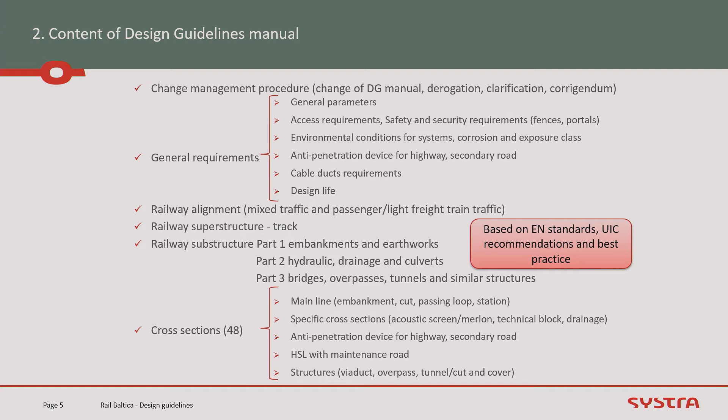We have one tome for tracks. For the substructure, we have three tomes: one for earthworks and embankment, one for hydraulic and drainage, and one for structures and tunnels. We have also prepared 48 cross-sections in total, which already provide a very good basis for all design tenders and detailed design. We have defined the embankment, main line, cutting, crossing loop, passing loop, and the station.